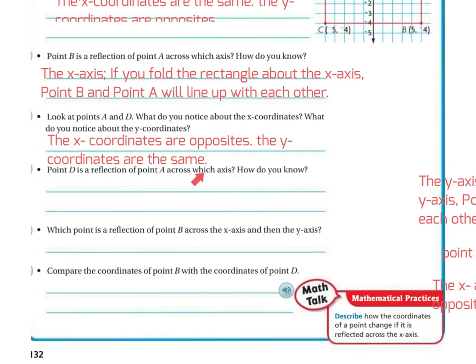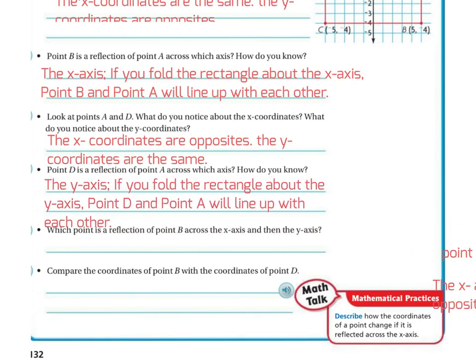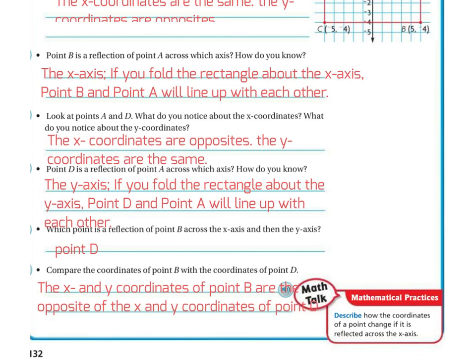Point D is a reflection of point A across which axis, and how do you know? The y-axis, because if you fold the rectangle about the y-axis, point D and point A will line up with each other. Which point is a reflection of point B across the x-axis and then the y-axis? Point D. Compare the coordinates of point B to the coordinates of point D. You're going to find that the x and y-coordinates of point B are the opposite of the x and y-coordinates of point D.